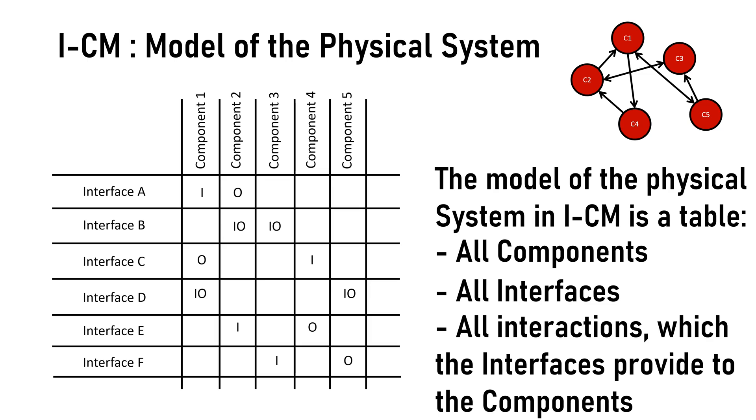We may use M for static or mechanical interface like fastening, welding and gluing for example. Every notation different from I and O is considered bidirectional. Now the table on the left side is actually the ICM model of the system shown in the diagram above. Let's see for example the components 2 and 4. They have an interaction where component 4 provides input to component 2.